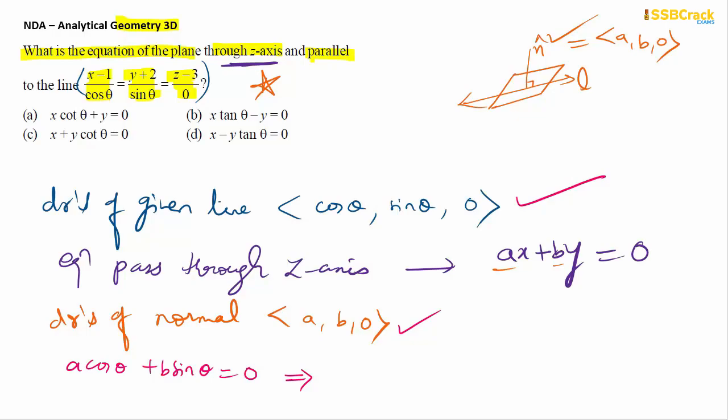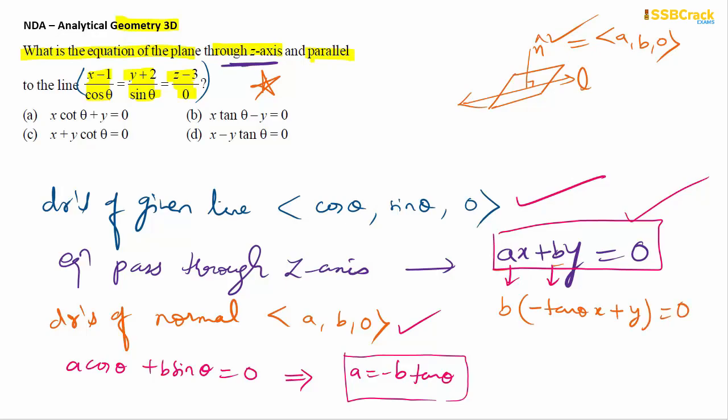From a cos θ + b sin θ = 0, we get a cos θ = -b sin θ, which gives a = -b tan θ. Substituting this into the plane equation ax + by = 0, taking b common, we get -tan θ x + y = 0. That is option B for this question.